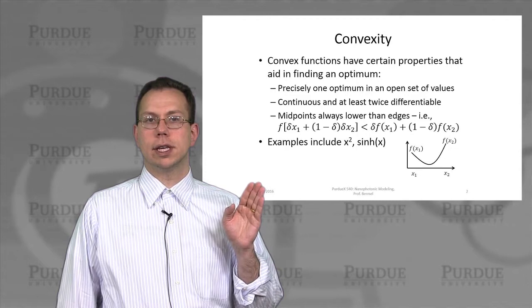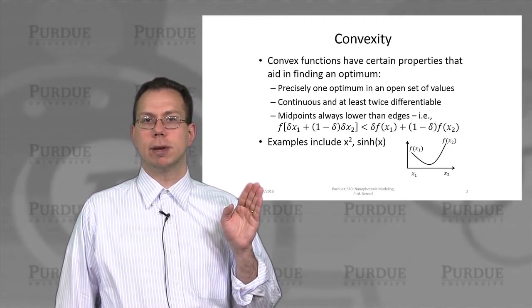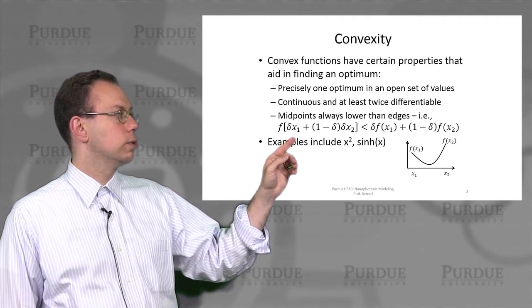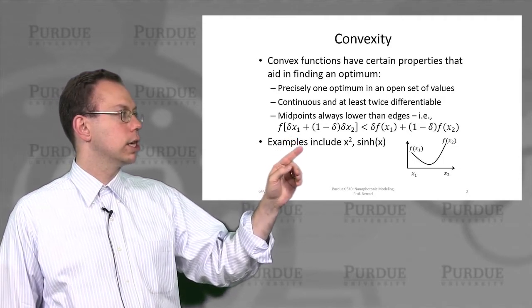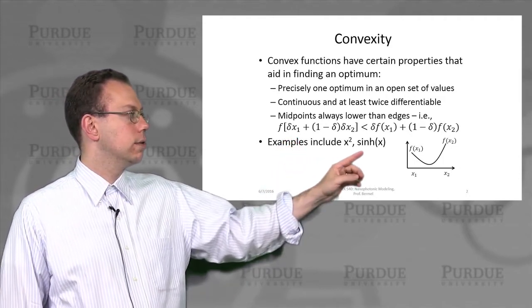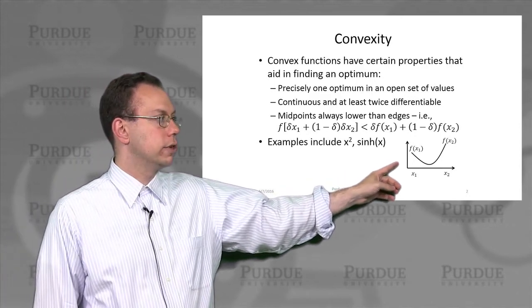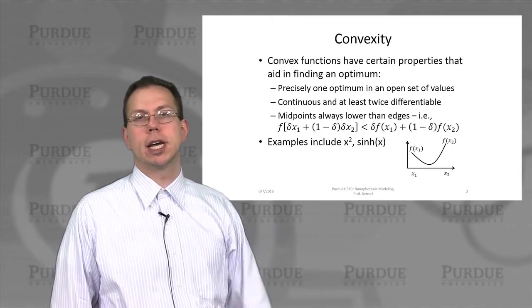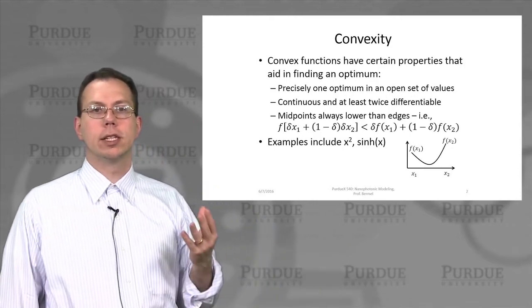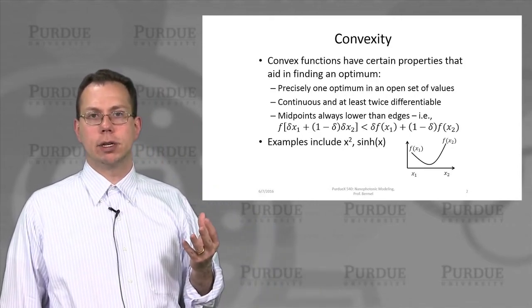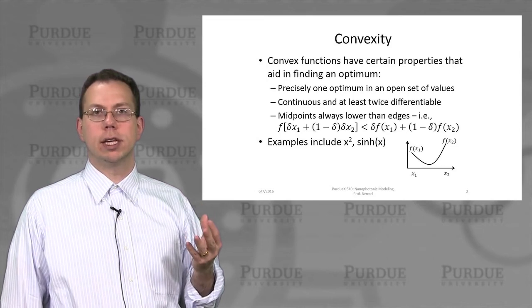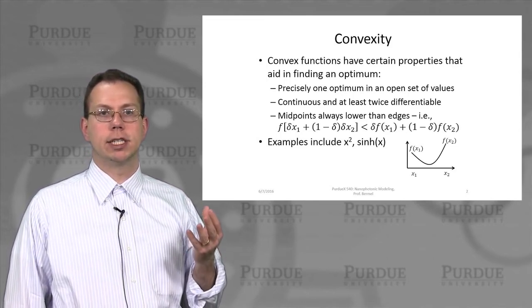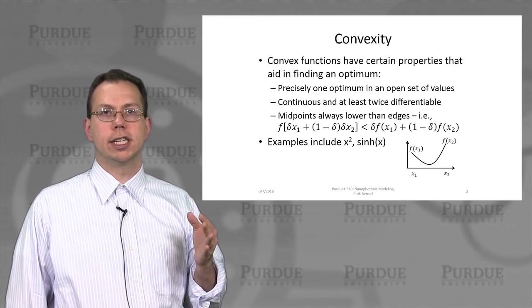And then also something that's very critical is that the midpoints are always lower than the edges and you can express it with this formal mathematical framework. But you can basically see what it looks like using this graph. So that just means it's kind of like a smooth parabolic type function, right? And so it could be like actual parabola, like x squared, or it could be like a hyperbolic sign function. It doesn't actually matter that much if it's a very nice function.